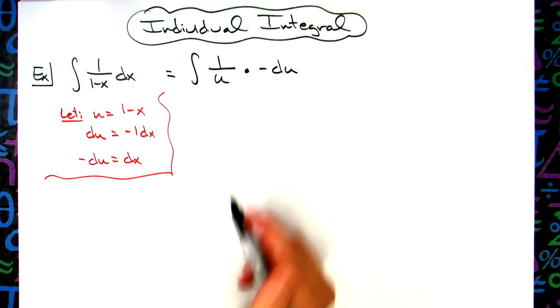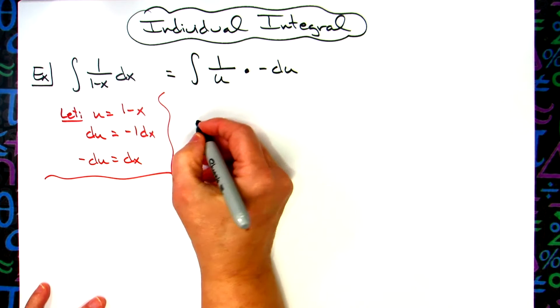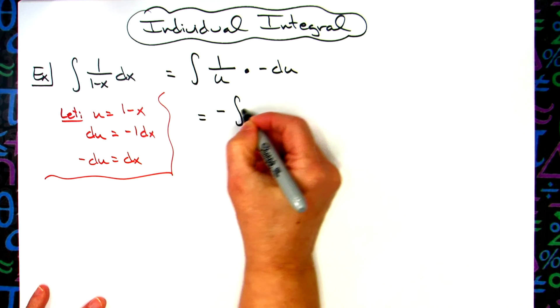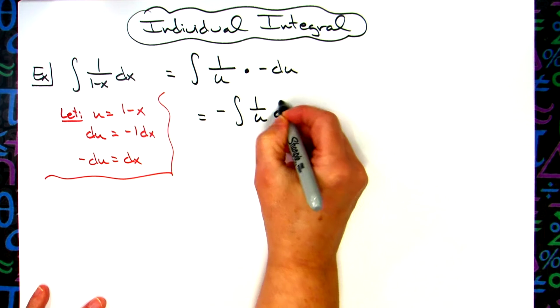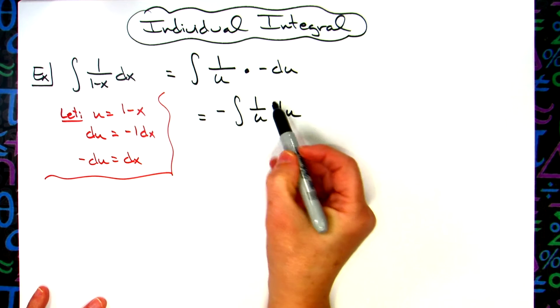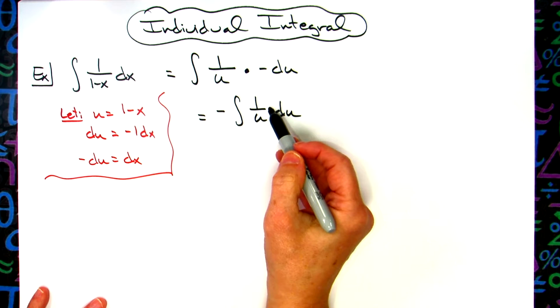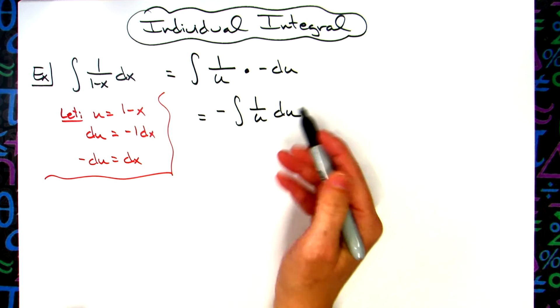All right from there we are going to want to pull that negative out in front of our integral sign. So negative out in front, integral 1 over u du. All right now hopefully at this point you have this integral memorized. This is natural log absolute value of u.